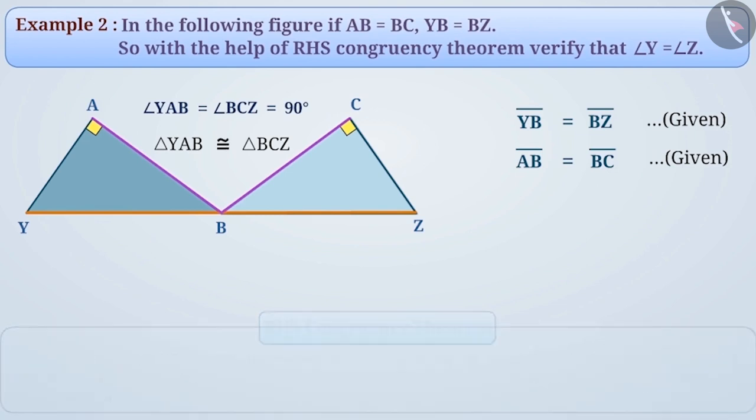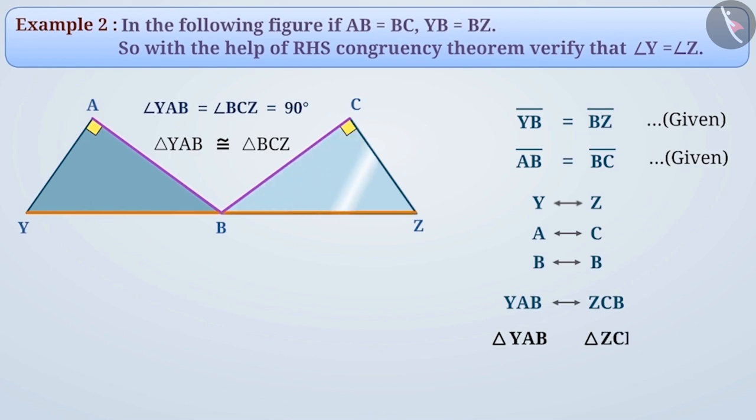Here, vertex Y is corresponding to the vertex Z. Vertex A is corresponding to the vertex C. Vertex B corresponds to vertex B. That is, YAB corresponds ZCB. So we can say that triangle YAB is congruent to triangle ZCB. Note that triangle ZCB and triangle BCZ are the same triangle. You will remember that we can write the names of any polygon in different ways.